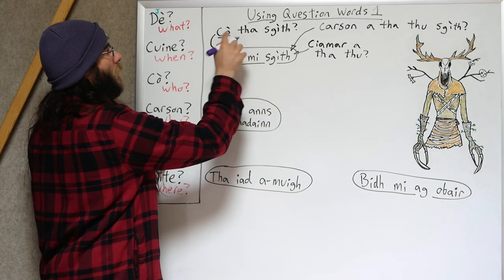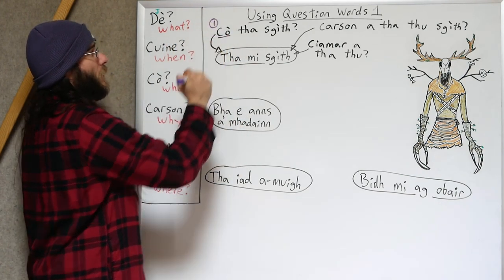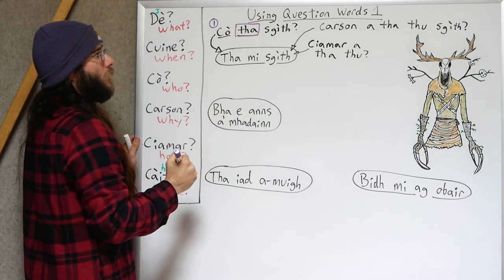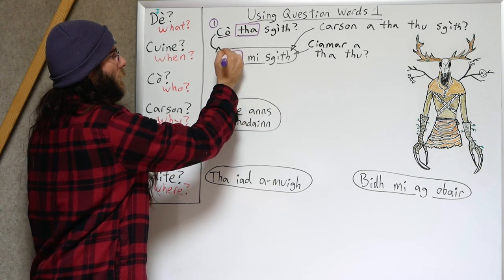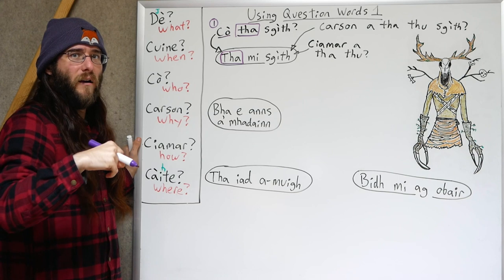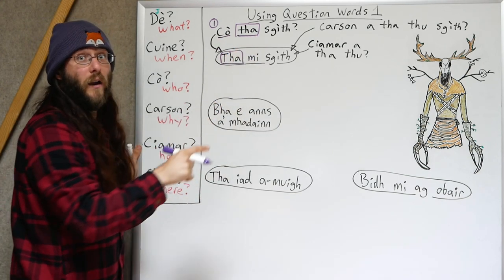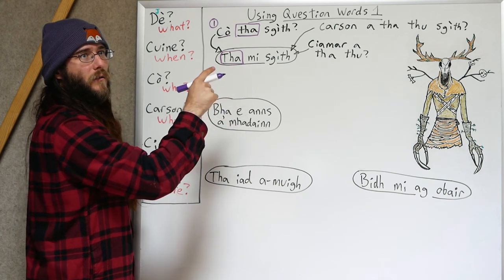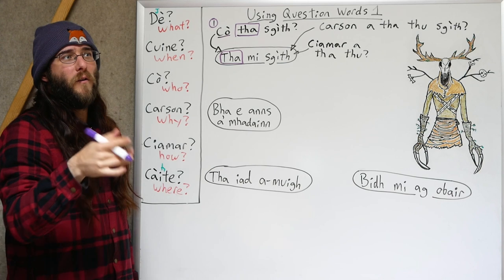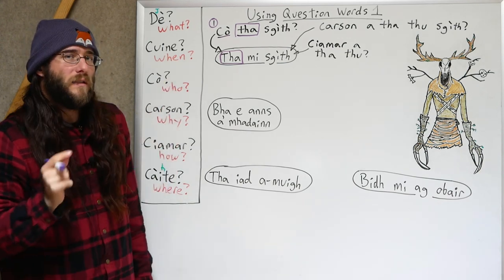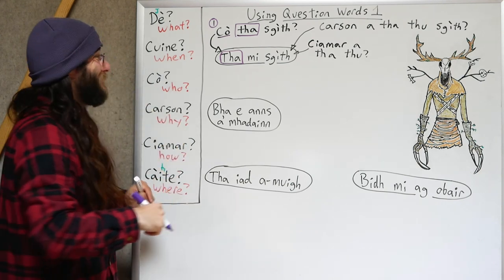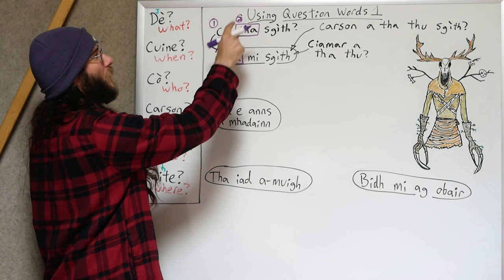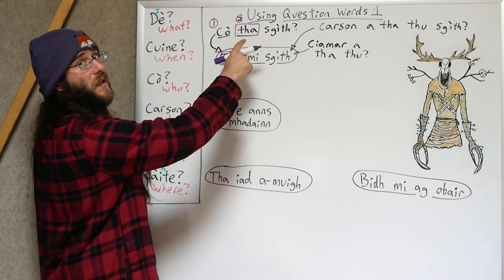First, we start with our question word — and this is true for everything, every question that uses question words. First you start with the question word, and then we're putting in 'ha.' Why 'ha'? Well, it mirrors our sentence — we're both talking about right now. 'I'm tired, right now.' 'Who is tired, right now?' So our questions about something will usually mirror this. The time is all right now, so we use 'ha.'